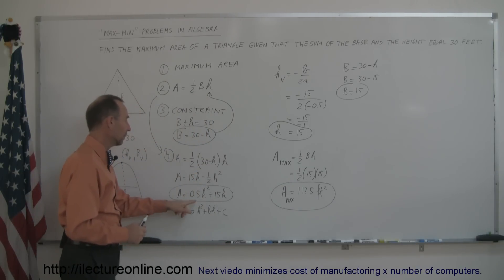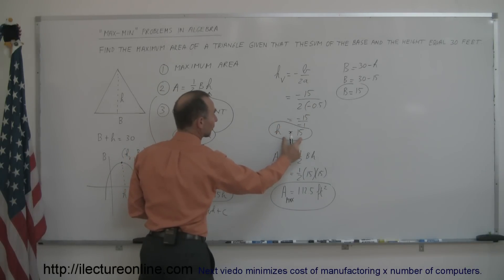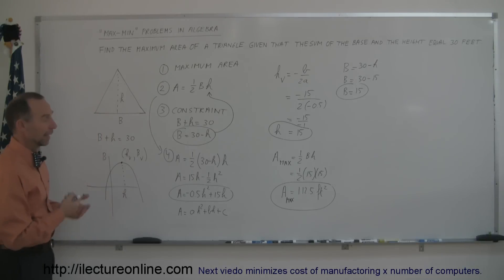B being the coefficient of the second term, a being the coefficient of the first term, you plug those in here, you find the value for h, use the constraint to find the value for b, and then you're able to find the total area. And that's how you solve these types of problems.